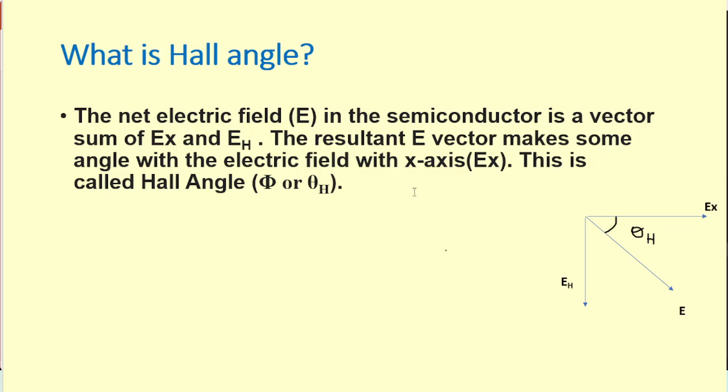So what is Hall angle? Basically, the net electric field in the semiconductor is the vector sum of Ex and Ey, and this is the resultant E. And the resultant vector E makes some angle with the electric field Ex. So this angle between Ex and the resultant field is known as the Hall angle theta H or phi.